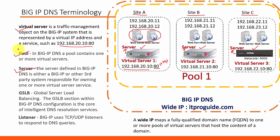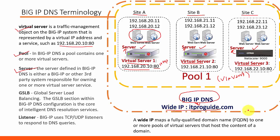A pool holds one or more virtual servers — it can contain one or multiple virtual servers. The next term is a wide IP. A wide IP maps a fully qualified domain name like itproguide.com or google.com to one or more pools of virtual servers that host the content of a domain. A DNS listener passively checks for DNS packets on port 53 at the assigned IP address. When a DNS query is sent to the listener's IP address, the Big IP GTM either handles the request locally or forwards it to the appropriate resource.